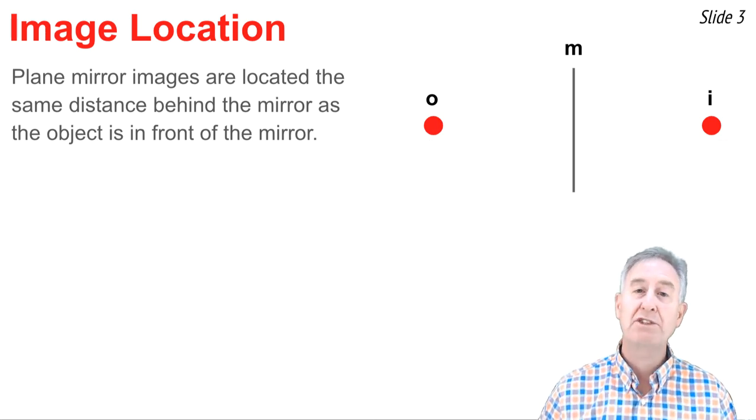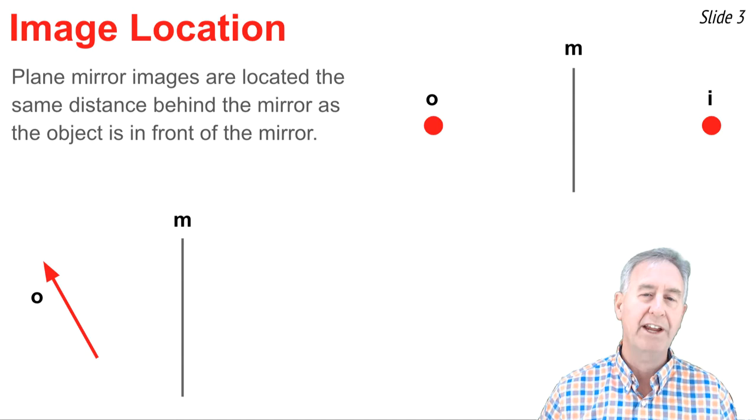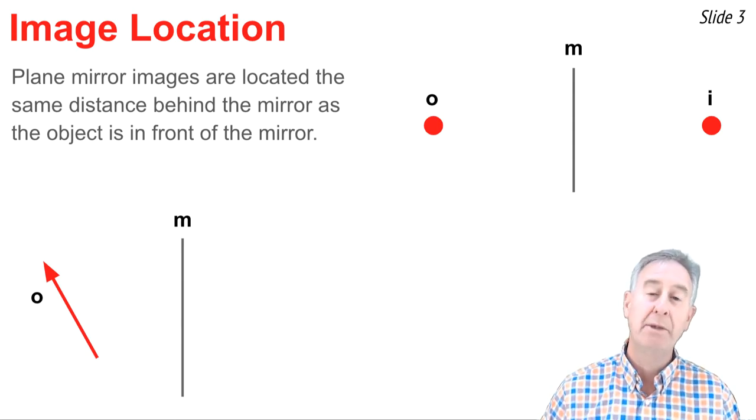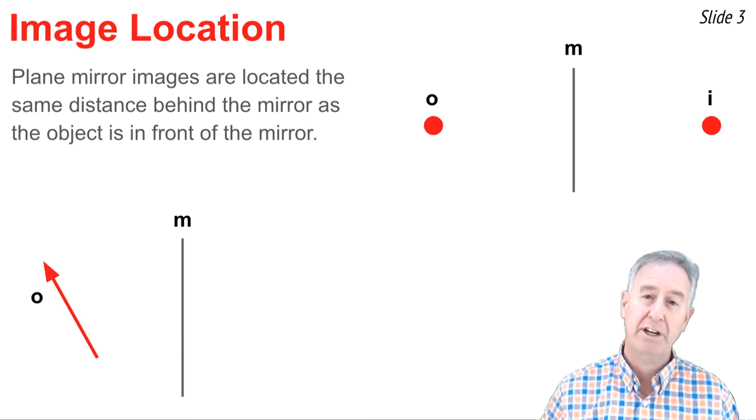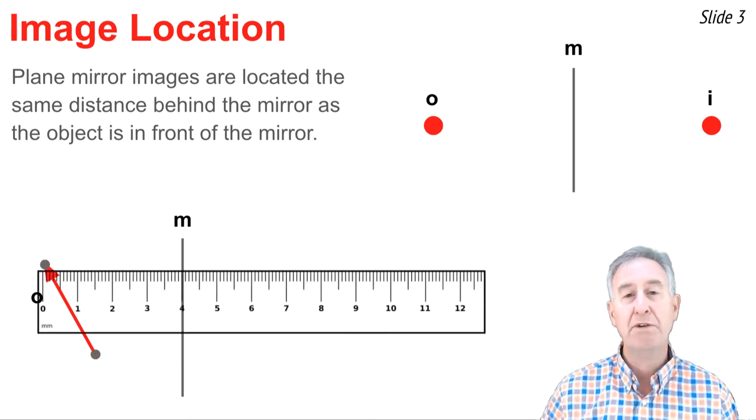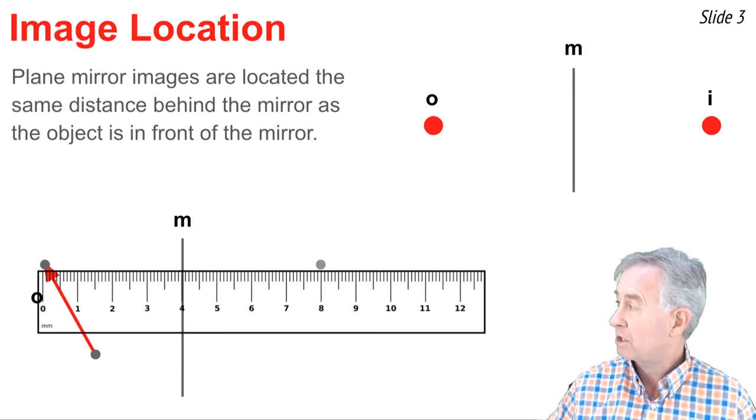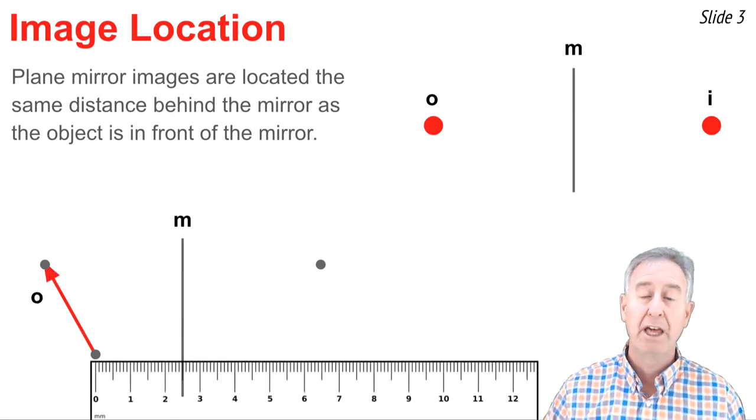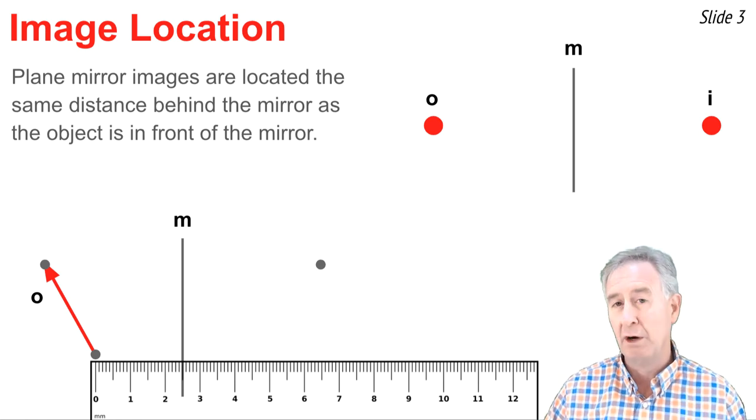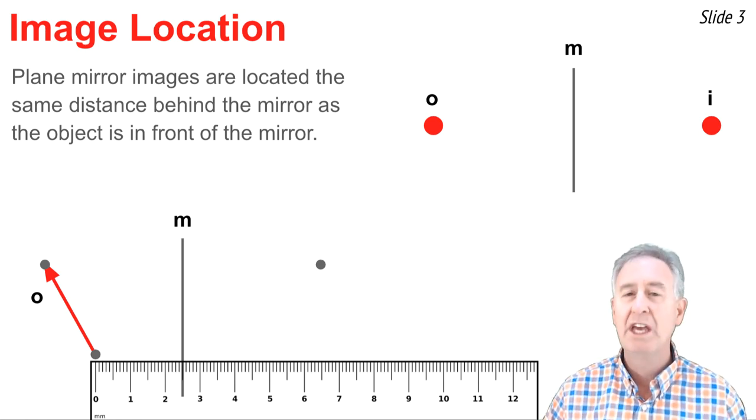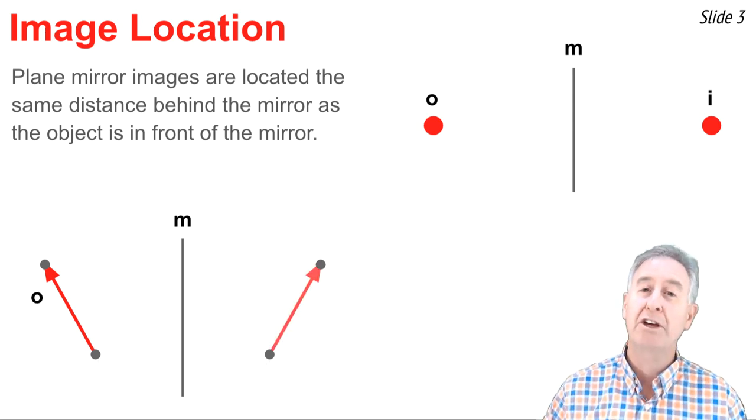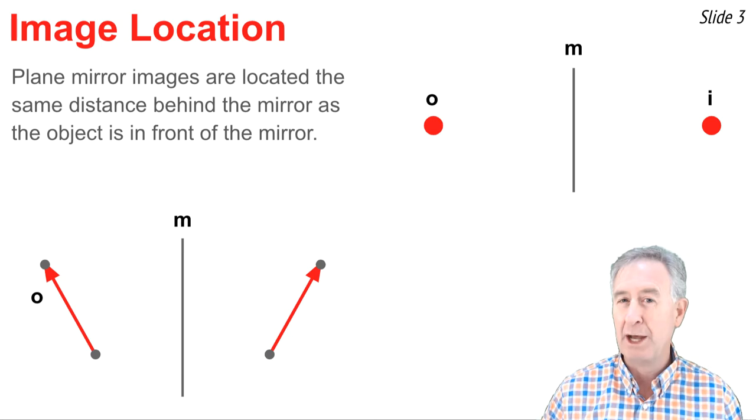Sometimes the object itself isn't a point, but instead is an arrow or a line. In such instances, you have to do the process twice, once for the top extreme and once for the bottom extreme of the arrow. So I put down my centimeter ruler and measure from the top extreme to the mirror. It's about 4 centimeters. And then out the other side another 4 centimeters, and I put a dot. I repeat the process for the bottom extreme. I measure from the bottom of the arrow to the mirror. It's about 2.5 centimeters. And out the other side the same distance, and I put a second dot. When I'm done, I can draw in the complete image of this object arrow.